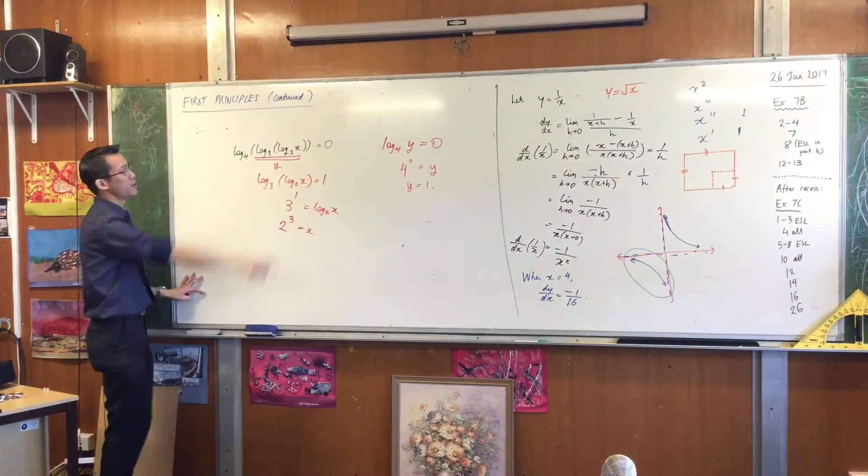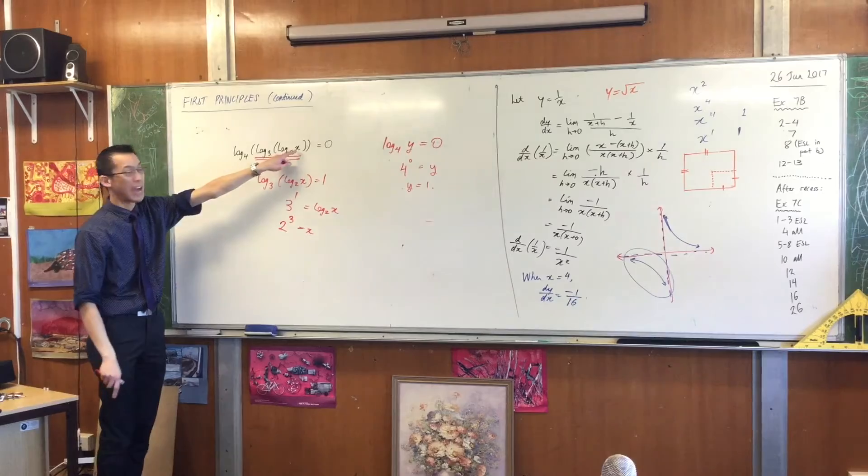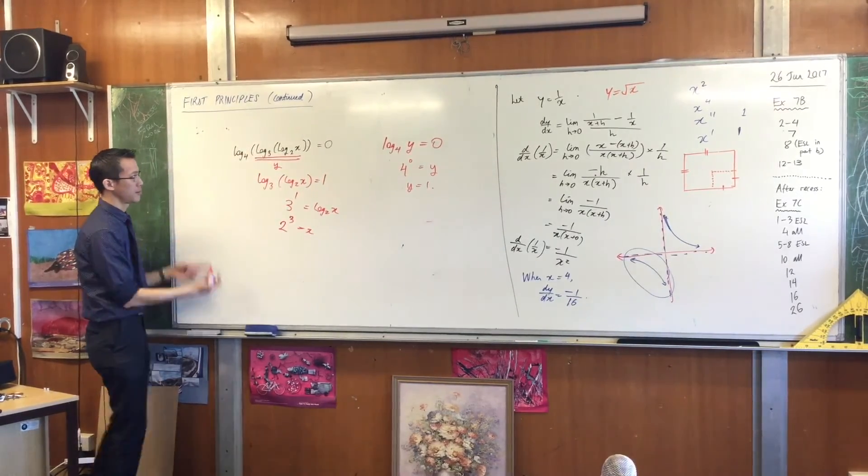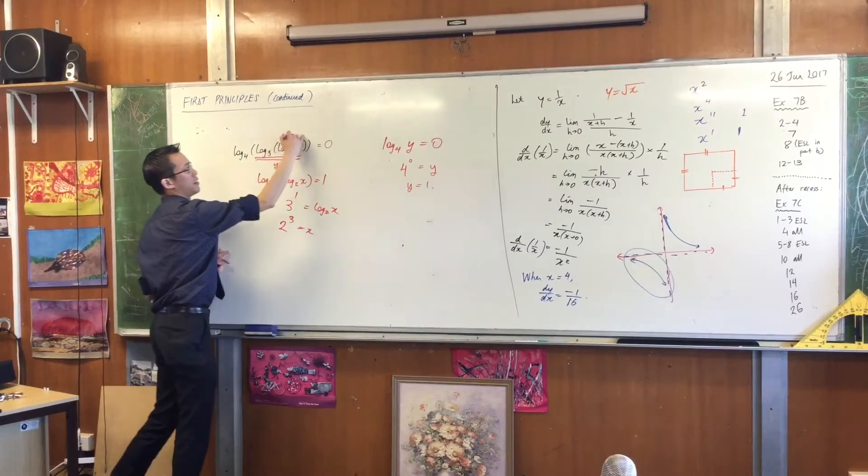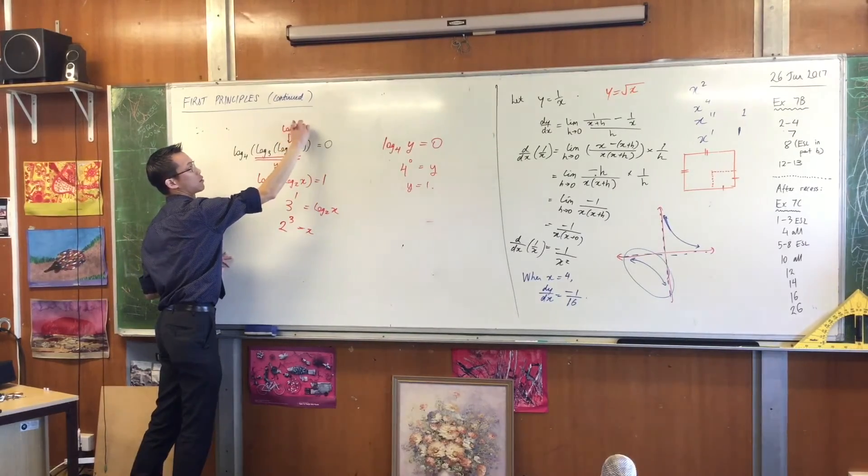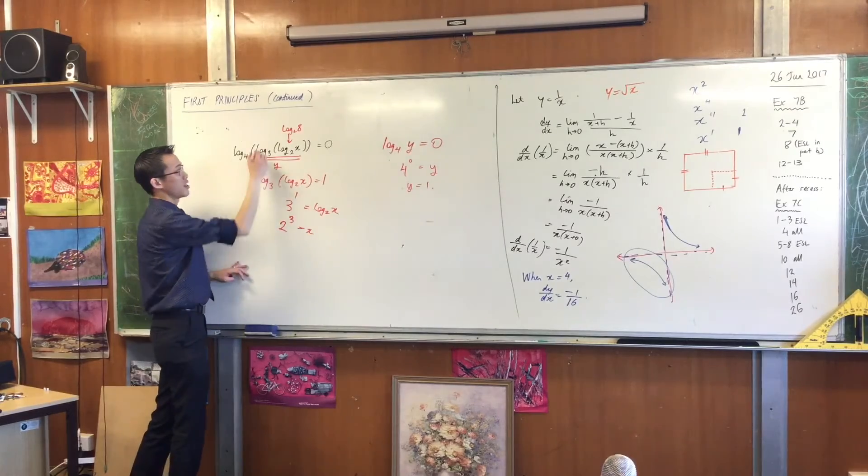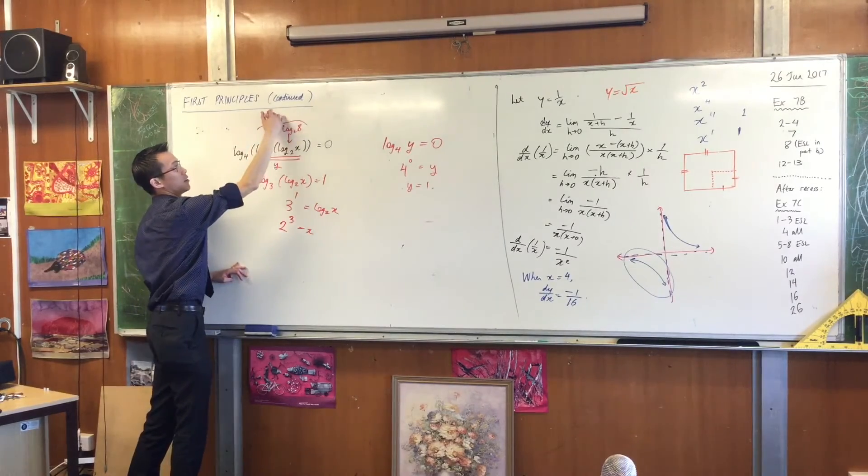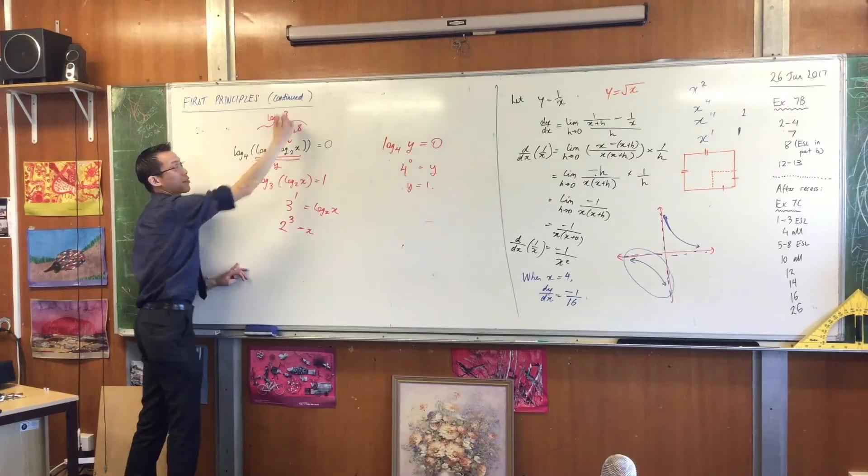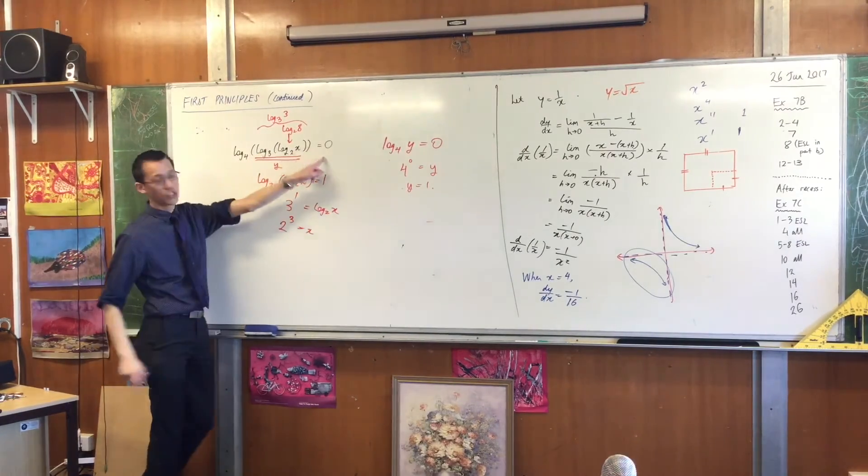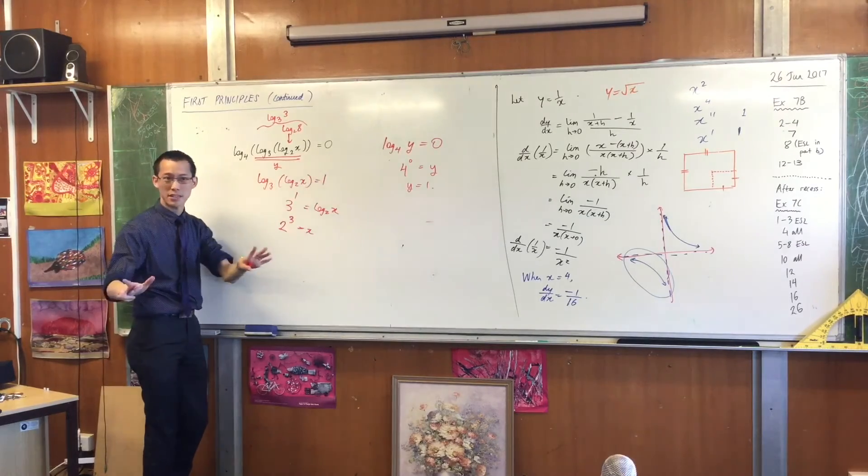You can quickly test this out. See what happens if you put 8 in here and see what happens as it climbs out. This is going to be log base 2 of 8, which is 3. Then you work out, go out one layer: log base 3 of 3, which is 1. And then log base 4 of 1, which sure enough is 0. Does that make sense?